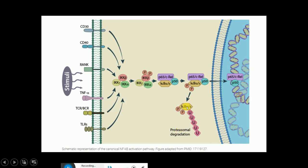When IKBα/ε is degraded, we are left with the P65/c-REL/P50 NF-κB complex. Previously the nuclear localization signal was masked, but now it is unmasked. Hence, the P65/c-REL/P50 NF-κB complex can travel to the nucleus, where it causes transcription of the target genes, ultimately leading to protein synthesis.